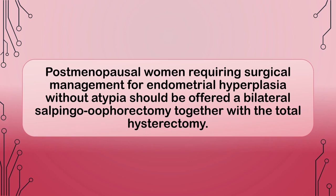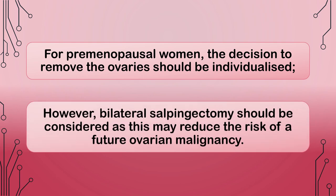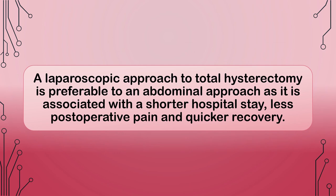Postmenopausal women requiring surgical management should be offered bilateral salpingo-oophorectomy together with a total hysterectomy. For premenopausal women, the decision to remove the ovaries should be individualized; however, bilateral salpingectomy should be considered as this may reduce the risk of future ovarian malignancy. A laparoscopic approach to total hysterectomy is preferable to an abdominal approach as it is associated with a shorter hospital stay, less postoperative pain, and quicker recovery.